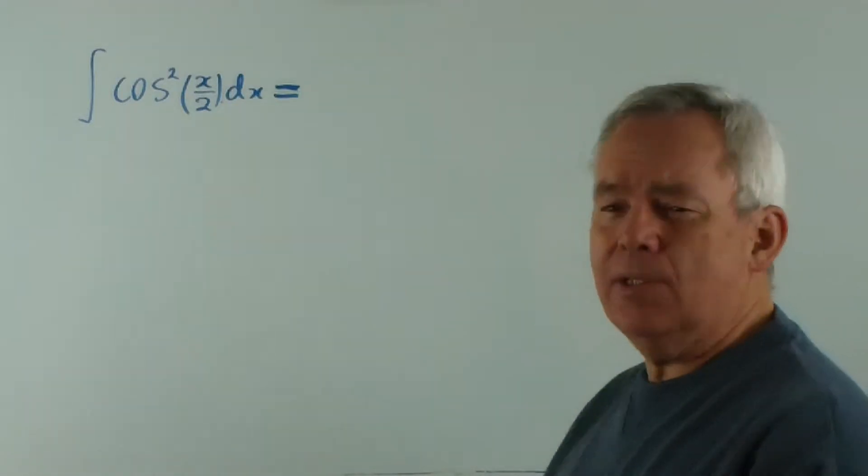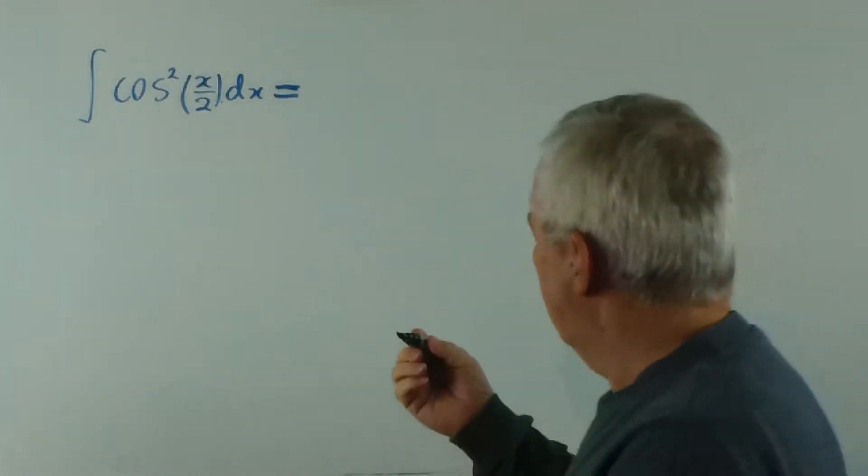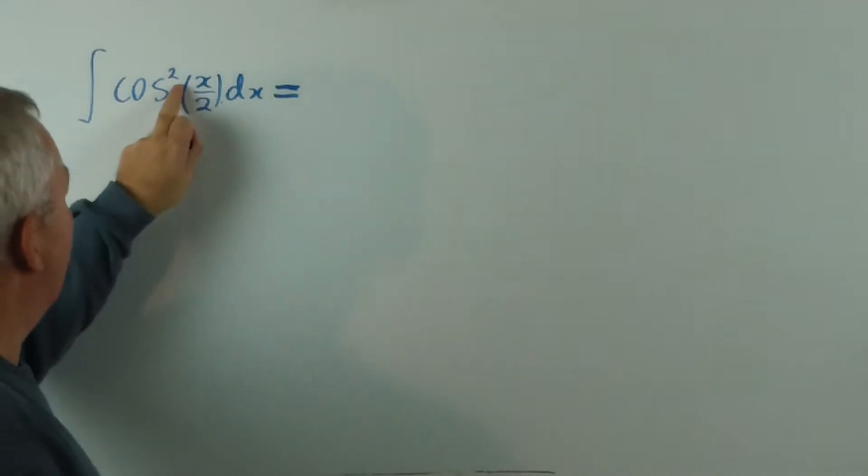G'day. Here's integral number 6 in Jim Caronius' 100 integrals list. And you'll notice immediately it's trigonometric. We have a square of the cosine.